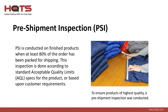The vast majority of inspections done today are what we call pre-shipment inspections, also known as a PSI. It is an important step in the quality control process and is the standard method for checking the quality of goods prior to being shipped. This inspection is conducted on finished products that are 100% complete and at least 80% already packaged for shipping. This inspection is done according to the standard acceptable quality levels or standard AQL specifications for that particular product, or in some cases based upon customer requirements. Samples are selected at random from the production lot and inspected for defects.